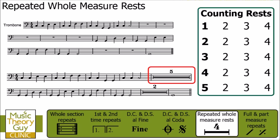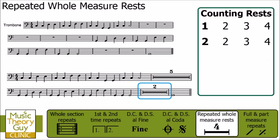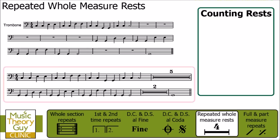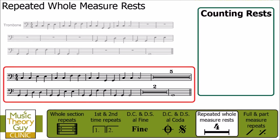That first number is a really helpful indicator of how many bars or measures they've counted so far. Looking at the two repeated whole measure rests at the bottom of our music, the way we'd count this: one, two, three, four — two, two, three, four — and then we'd play that very last note. Let's have a listen to this trombone part, and I'll add in how we count those repeated whole measure rests as well.